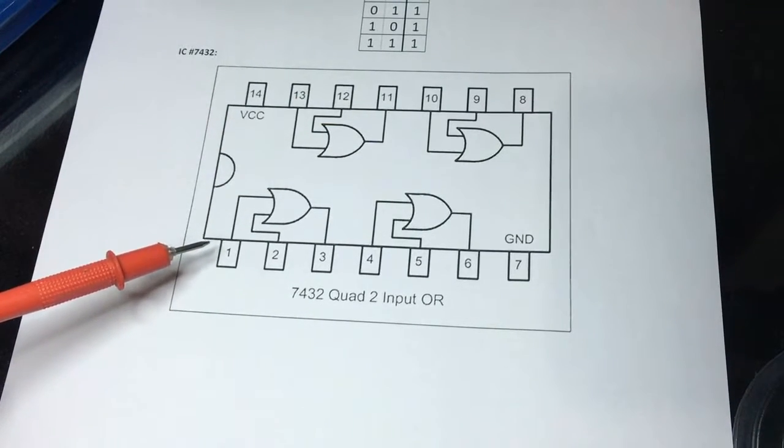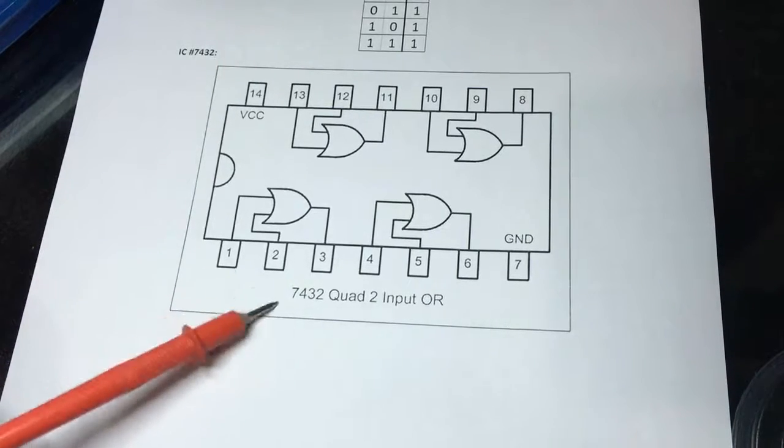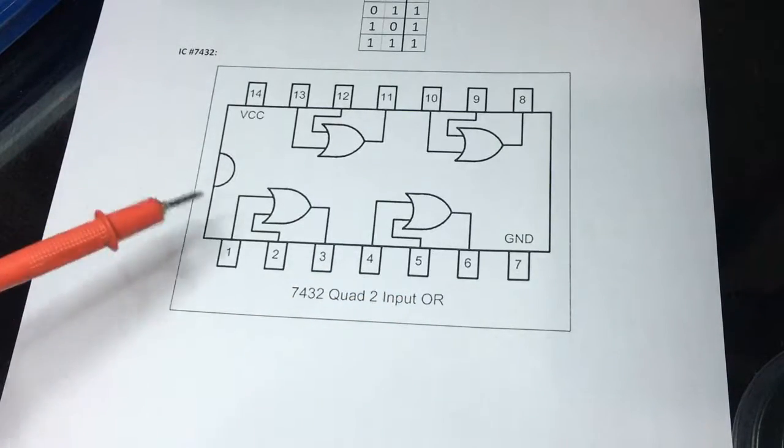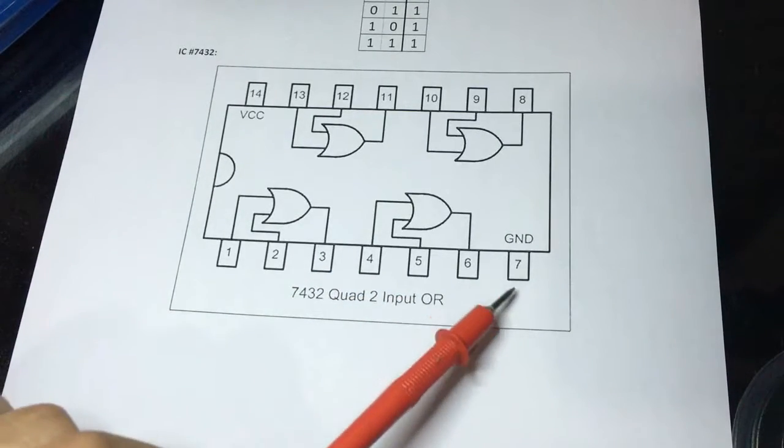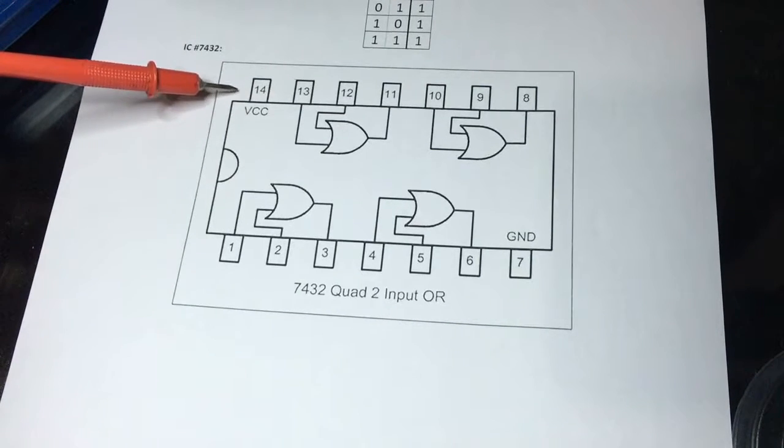For the first OR gate, these are the two inputs of it and this is the output. Two inputs, output, and so on. We have pin number seven, the ground pin, and pin number fourteen, the VCC pin.